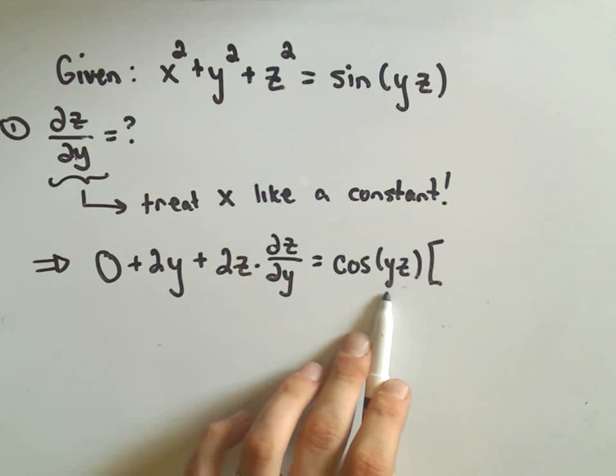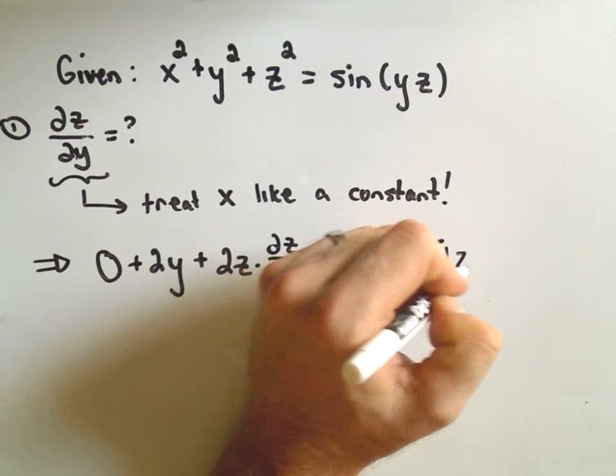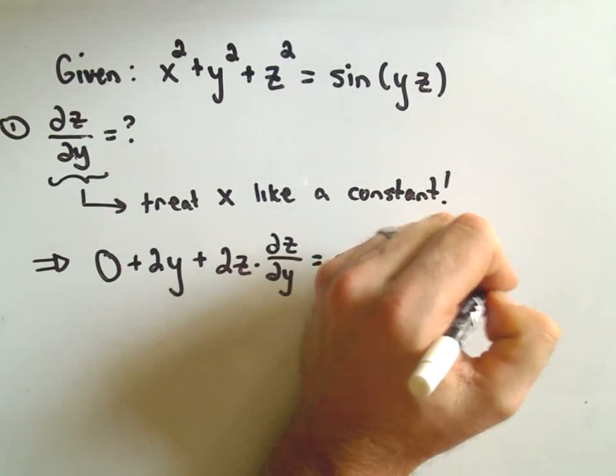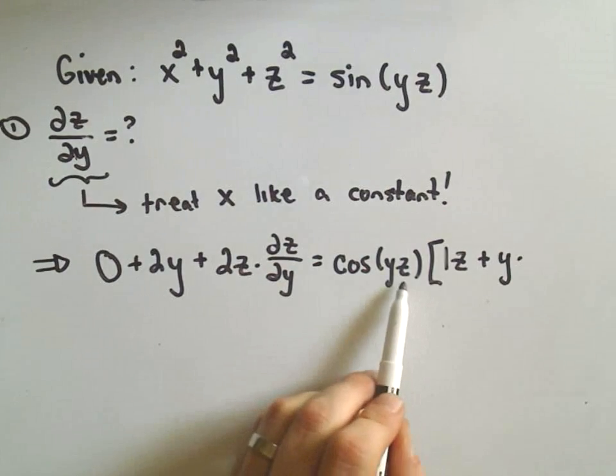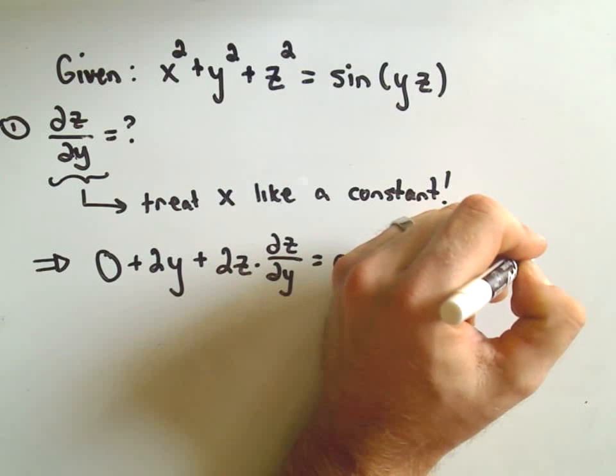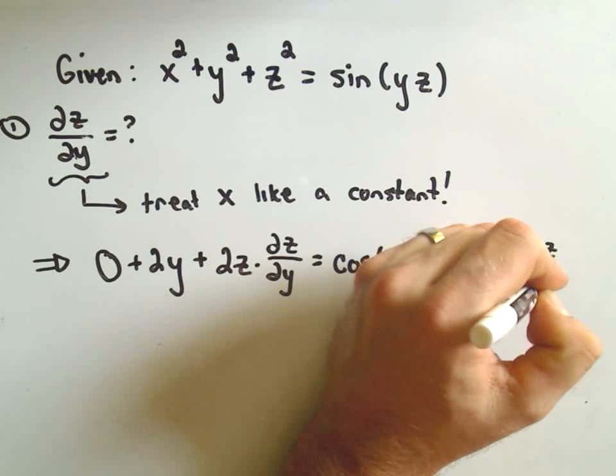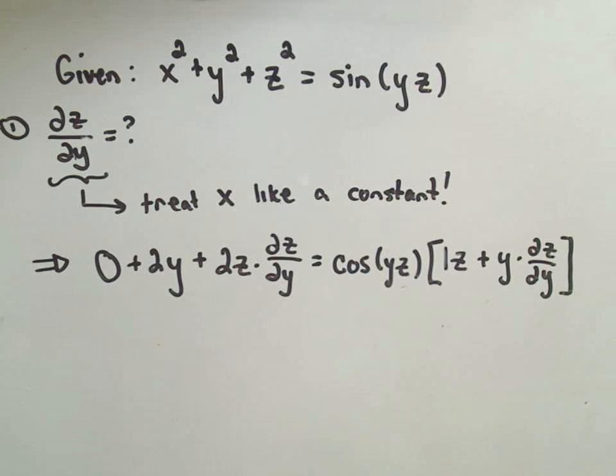So if I take the derivative with respect to y, I'll simply get 1z plus, and now I'll leave the y part alone. If I take the derivative of z, I'll simply get 1 partial of z with respect to y. Again, remembering to tack that part on. And now I've taken the derivative.